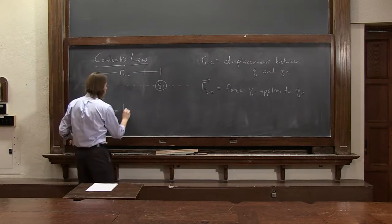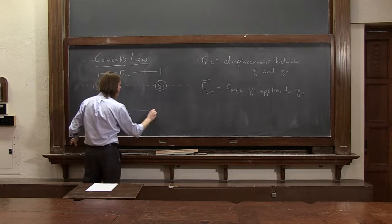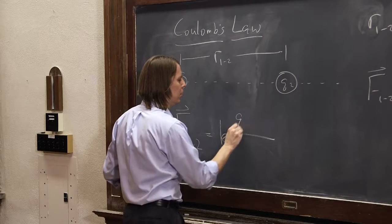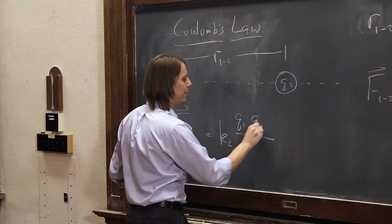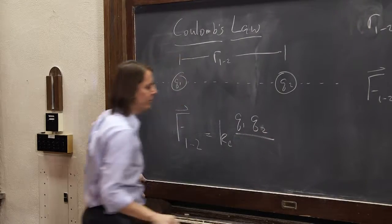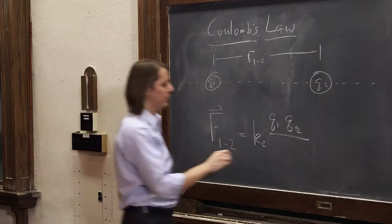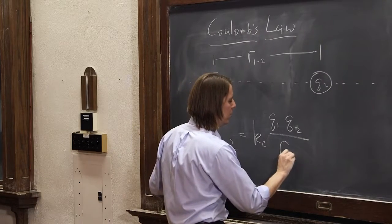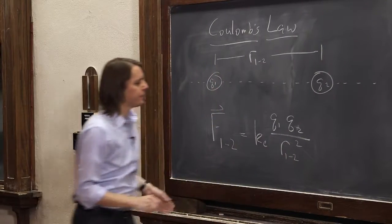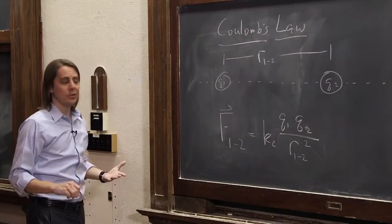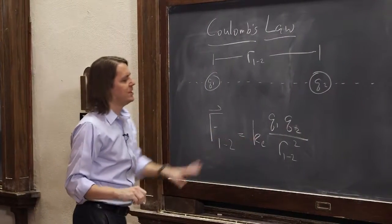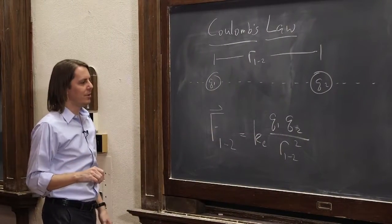It's equal to Coulomb's constant, Ke, just like before. The charges go up in the top, just like before. Q1 times Q2, the separation goes in the bottom, R1,2 squared. So that's the same magnitude as before. We just have some extra notation to keep in mind who is applying force to whom.